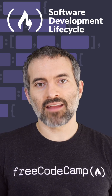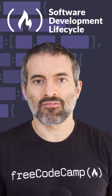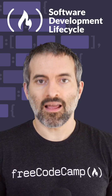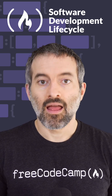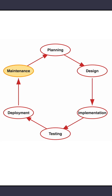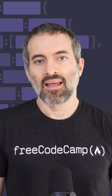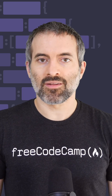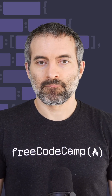Here are the standard stages used in the software development lifecycle: planning stage, design stage, implementation stage, testing stage, deployment stage, and maintenance stage. Let's take a closer look at those stages in more detail.